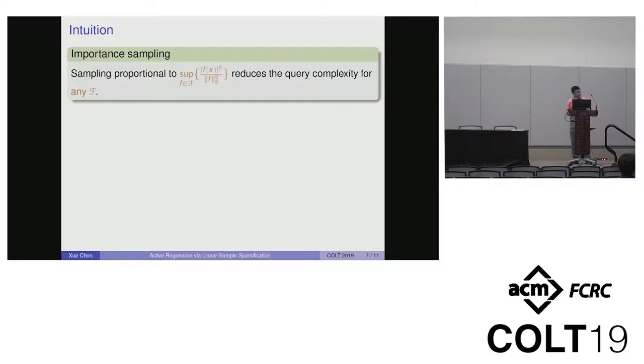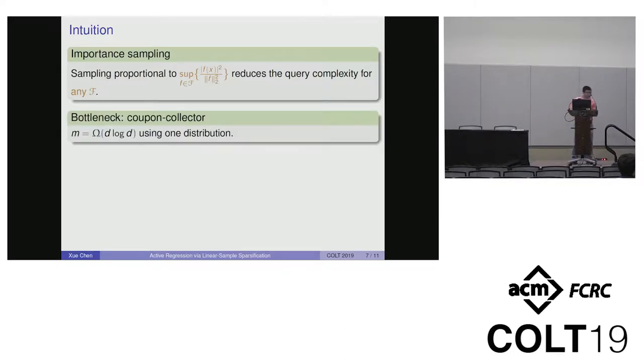Let me say a few words about our approach. The basic idea is to apply importance sampling. We observe that sampling proportional to sup_f |f(x)|^2 normalized by the L2 norm reduces query complexity for any family, not necessarily linear. This turns out to be equivalent to leverage score for linear families. However, this only gives one distribution to generate query points. By a coupon-collector argument, we know M is Omega(D log D) if we only use one distribution. To avoid this, the basic idea is to use a sequence of distributions D_1 to D_m, where we sample x_i from D_i and allow D_i to depend on previous points x_1 to x_{i-1}.